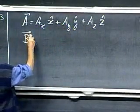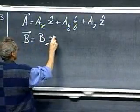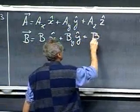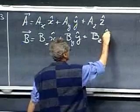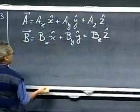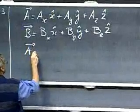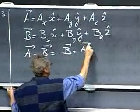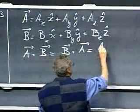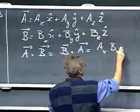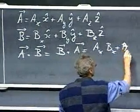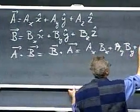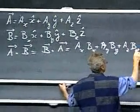I have another vector B, BX X roof, BY Y roof, BZ Z roof. Now, the dot product, A dot B, also called a scalar product, equals B dot A, and it is defined as AX BX plus AY BY plus AZ BZ.